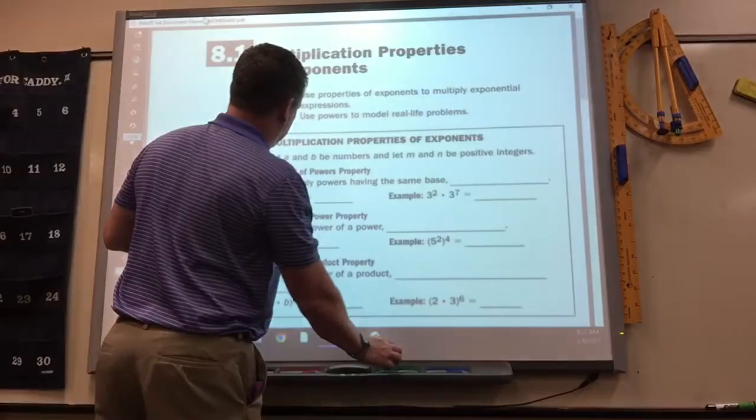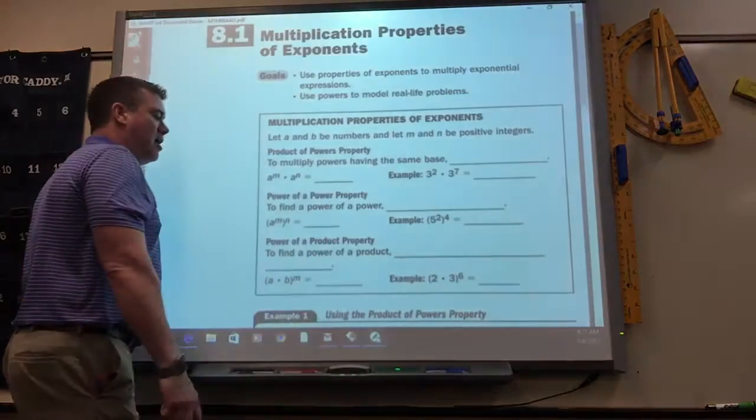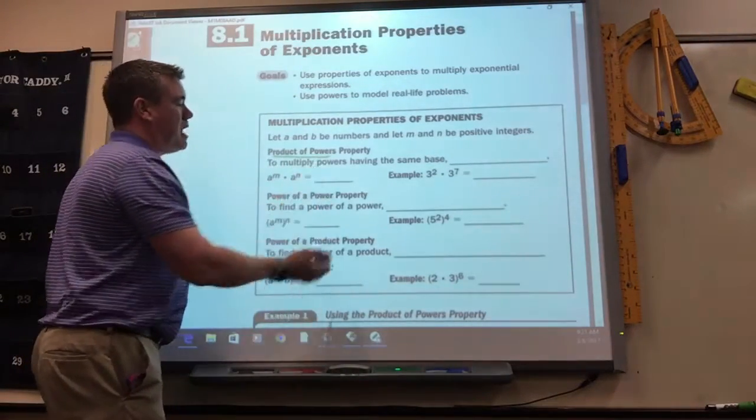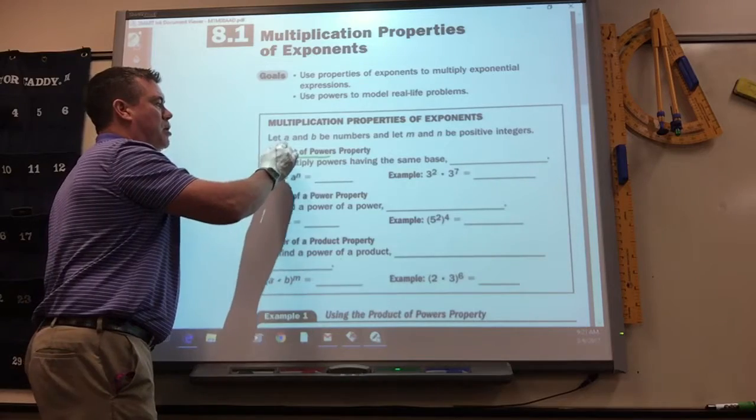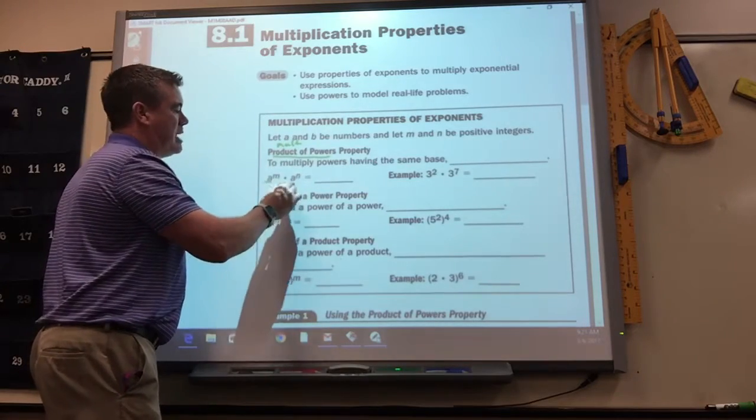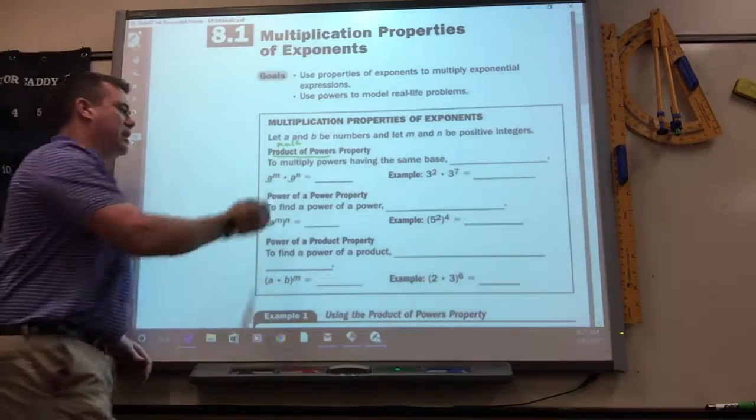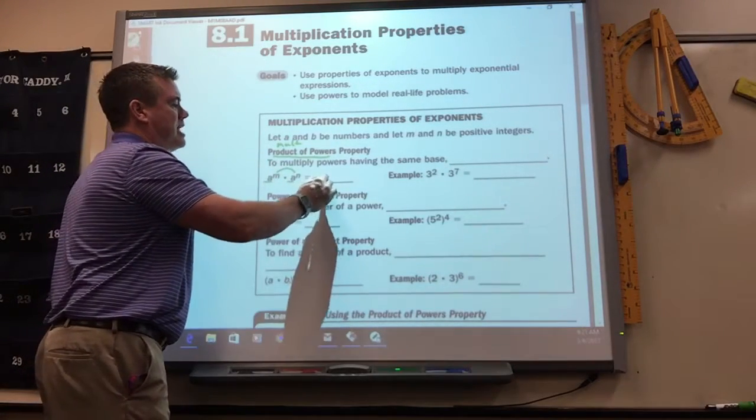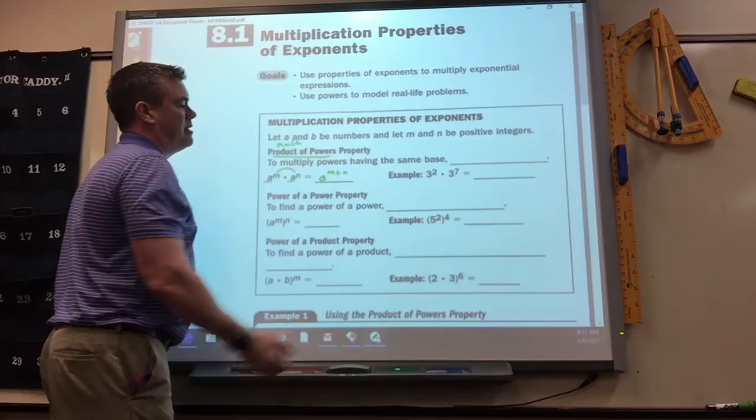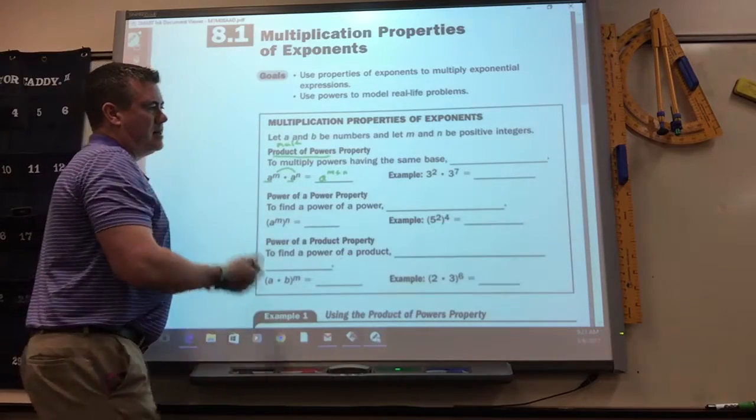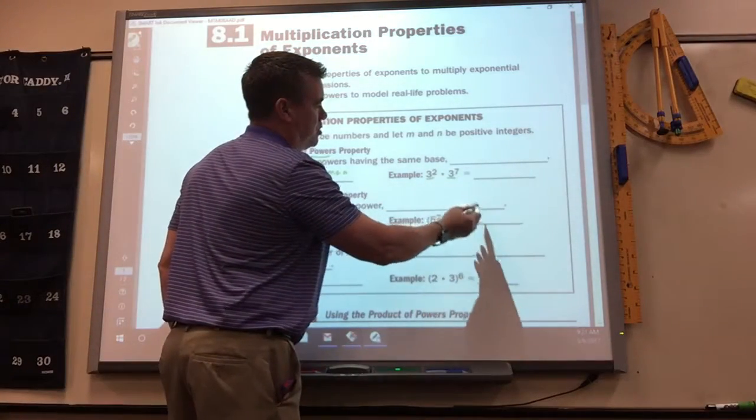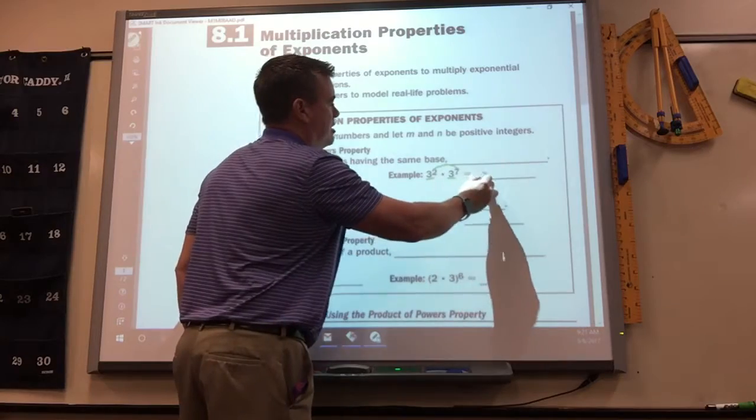So the multiplication properties are product of powers. Product means you multiply. As long as the base is the same, whether it's a letter or a number, all you've got to do is add the tops. So that's A to the M plus N. Here they've got the base as both threes, so 2 plus 7 is 9.